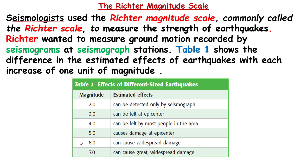Magnitude 2 can be detected only by seismograms — that means only a device can detect it; human beings cannot feel it. Magnitude 2 can be felt at the epicenter. If you are at the center of the earthquake you can feel it, but of course it is not dangerous. Magnitude 4 can be felt by most people in the area. Magnitude 5 causes damage at the epicenter, destroying buildings. Magnitude 6 can cause damage to buildings, and magnitude 7 can cause great damage or destroy cities.